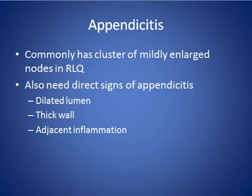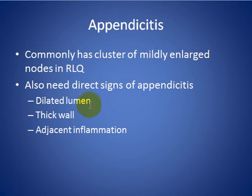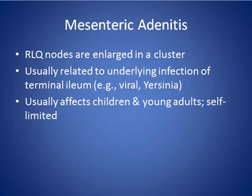Appendicitis commonly has a cluster of enlarged nodes in the right lower quadrant. For diagnosis, you also need the direct signs of appendicitis: a dilated, thick-walled appendix with adjacent surrounding inflammatory changes.